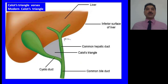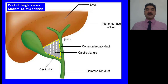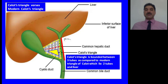Comparing Calot's triangle versus the modern Calot's triangle: the boundaries of the modern Calot's triangle are superiorly the liver, laterally the cystic duct, and medially the common hepatic duct. In contrast, the original Calot's triangle is bounded superiorly by the cystic artery, laterally by the cystic duct, and medially by the lower part of the common hepatic duct. So Calot's triangle is bounded between three tubes — cystic artery superiorly, cystic duct laterally, and lower part of the common bile duct medially — in contrast to the modern triangle, which lies between two tubes and the liver.